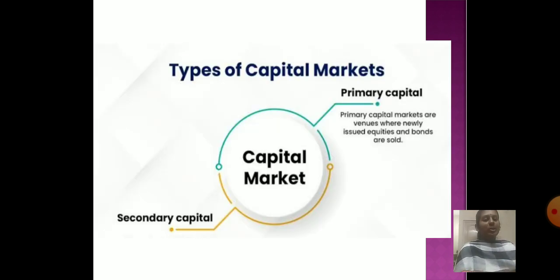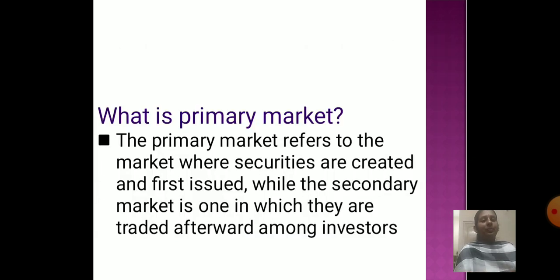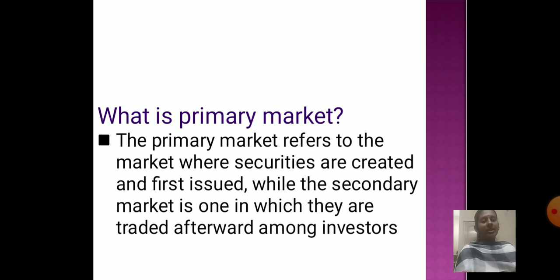Types of Capital Market: Primary and Secondary. What is Primary Market? A Primary Market refers to the market where securities are created and first issued, while the Secondary Market is one in which they are traded among investors thereafter.